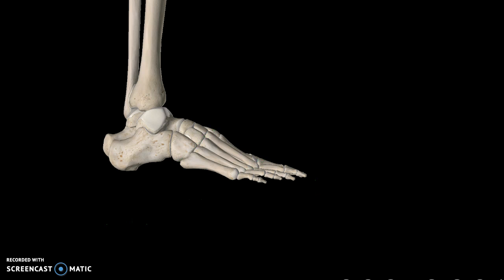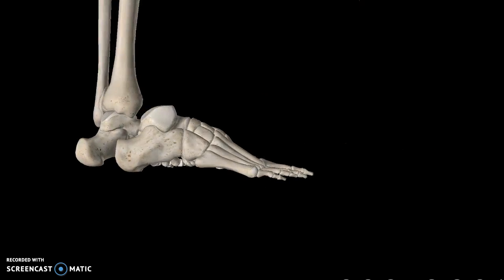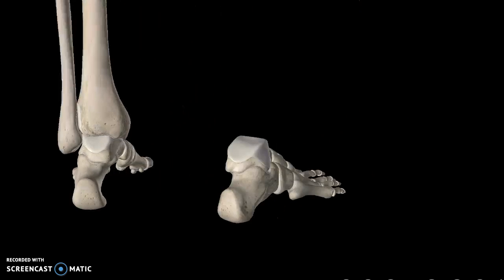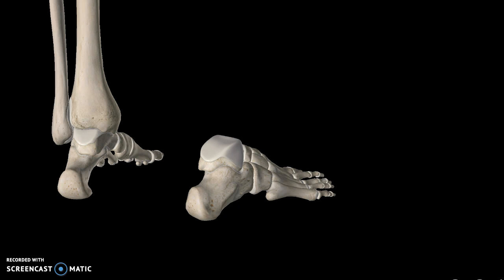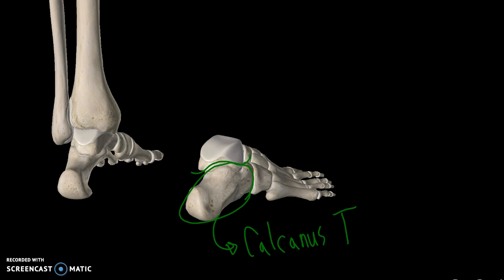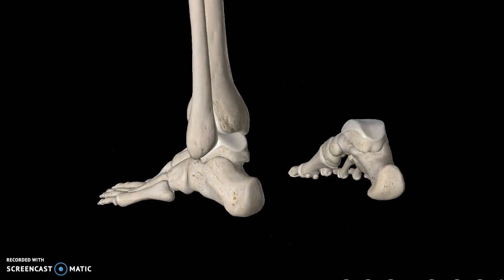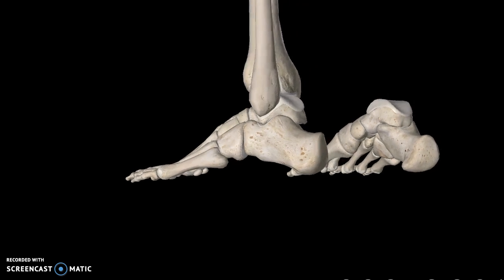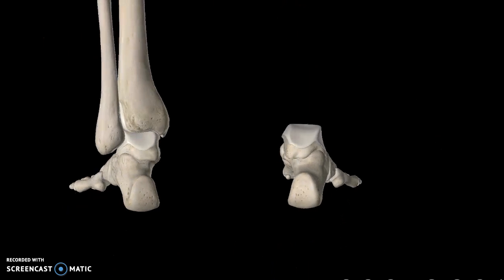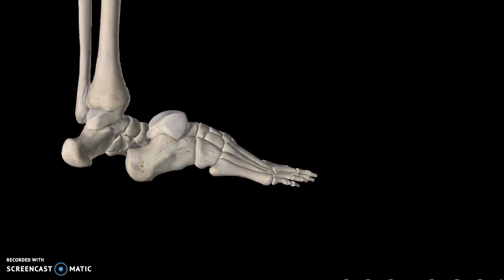Let's focus on the tarsals. If you look at the structure of the foot, you'll see this big structure — this is known as the calcaneus tarsal. Right above the calcaneus tarsal you'll see this structure, which is known as the talus. You can see the calcaneus right here, and right above it you'll see the talus.